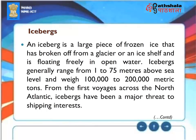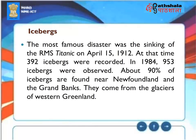Icebergs: An iceberg is a large piece of frozen ice that has broken off from a glacier or an ice shelf and is floating freely in open water. Icebergs generally range from 1 to 75 meters above sea level and weigh 100,000 to 200,000 metric tons. From the first voyages across the North Atlantic, icebergs have been a major threat to shipping. The most famous disaster was the sinking of the RMS Titanic on April 15, 1912, when 392 icebergs were recorded. In 1984, 953 icebergs were observed. About 90% of icebergs are found near Newfoundland and the Grand Banks, coming from the glaciers of western Greenland.